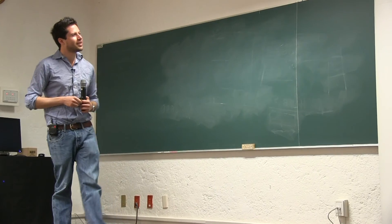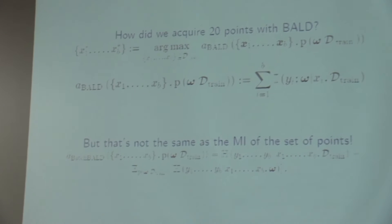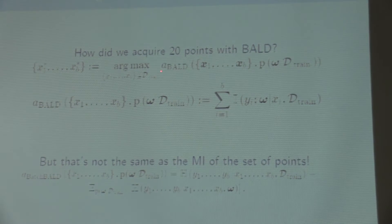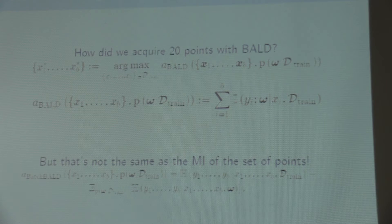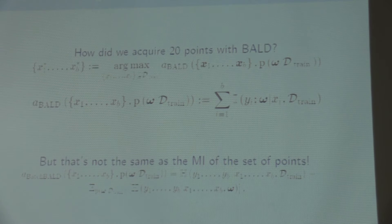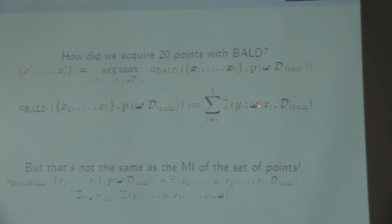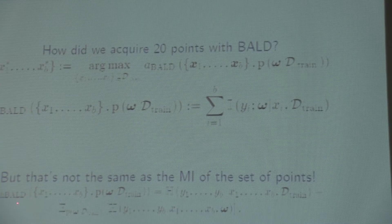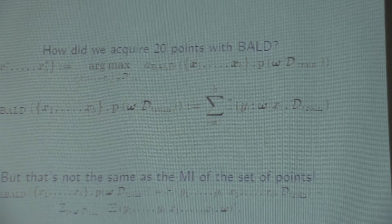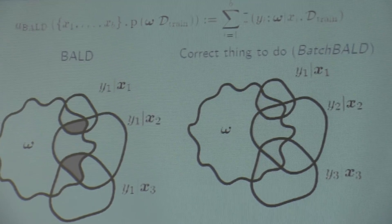The answer is redundancy. Taking the top 20 most interesting points with BALD individually means summing individual mutual information scores and selecting the 20 points that maximize that sum. This is very different from looking at the joint mutual information of a set of 20 points together with the model parameters — which turns out to be surprisingly difficult to compute.